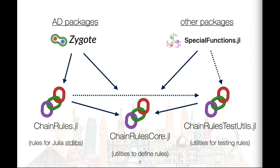This is how these three packages interact with the rest of the ecosystem. An AD package like Zygote depends on ChainRulesCore to be able to use the rules and the tangent types, and on ChainRules to get access to hundreds of rules for Julia's standard libraries. Other packages, such as SpecialFunctions.jl, only need to depend on the very lightweight ChainRulesCore package to define their custom rules.